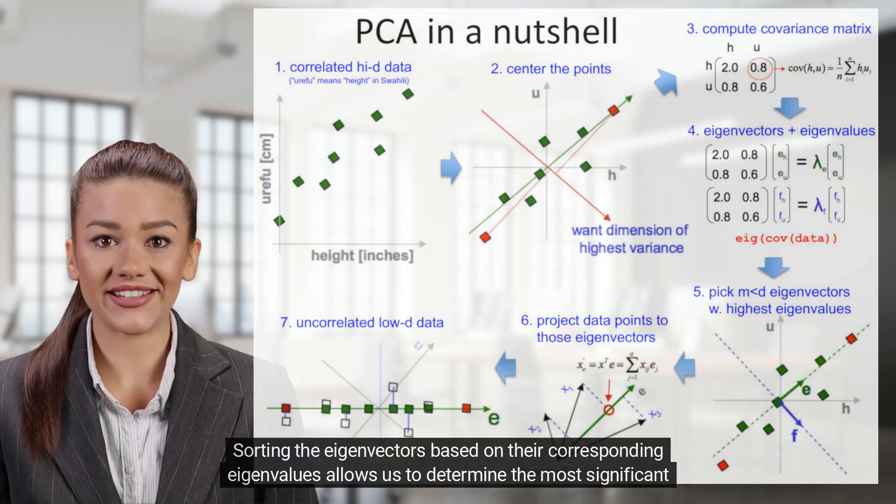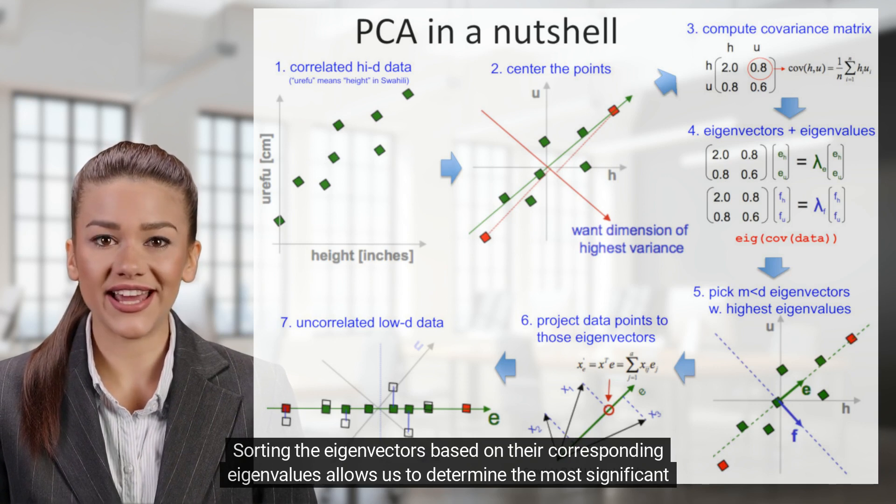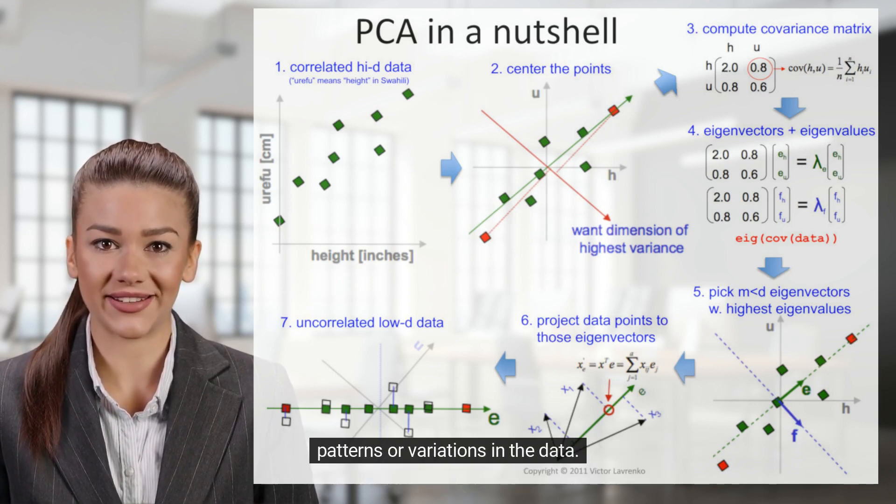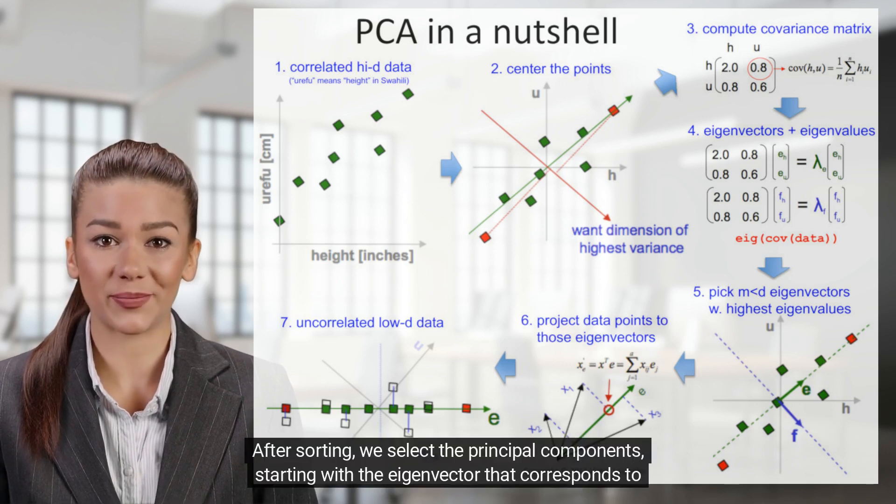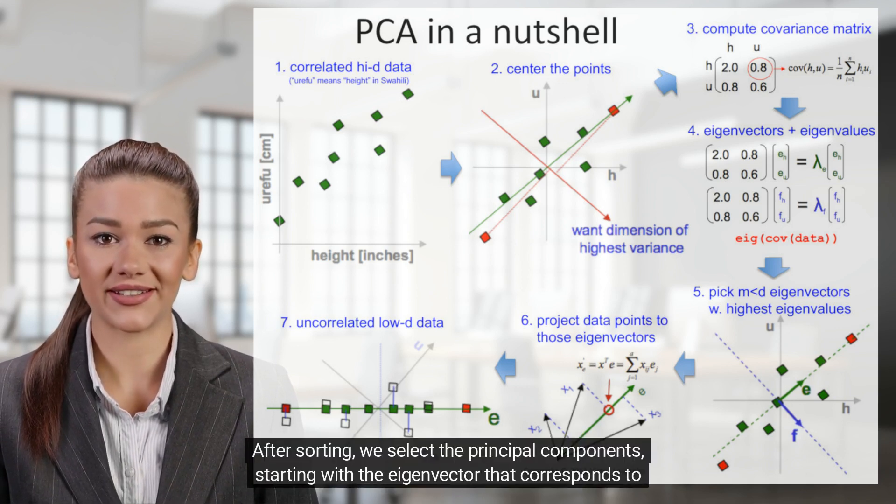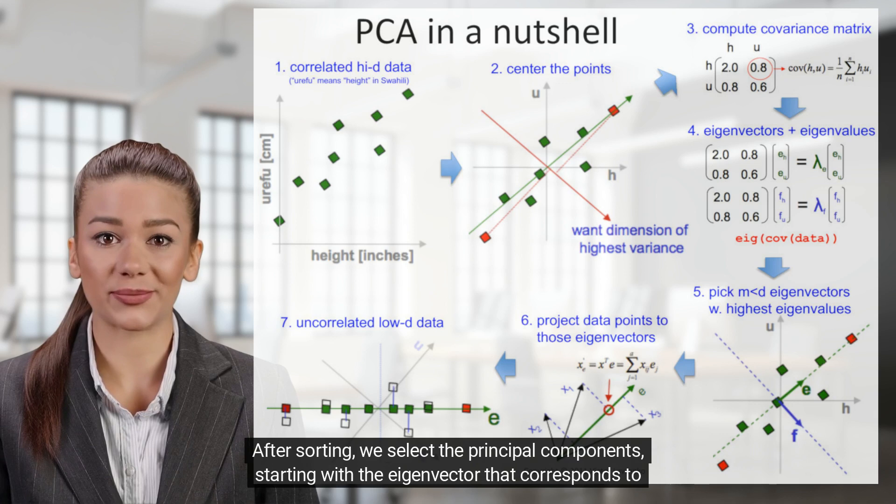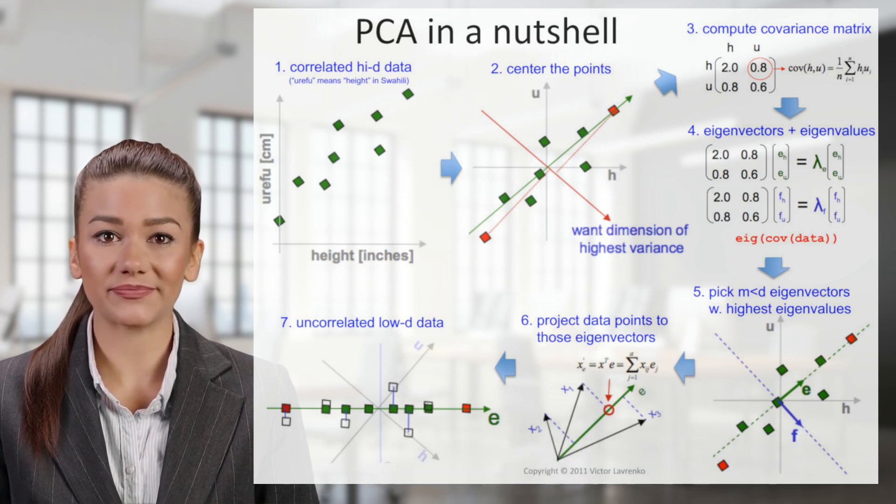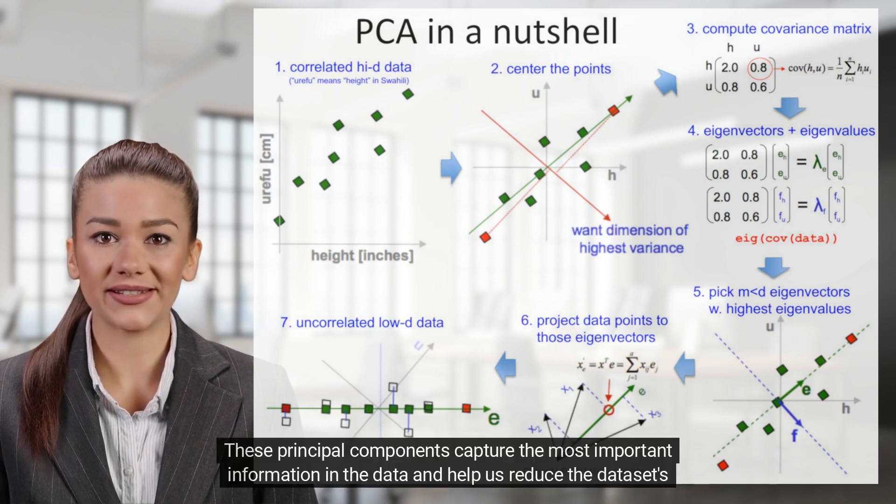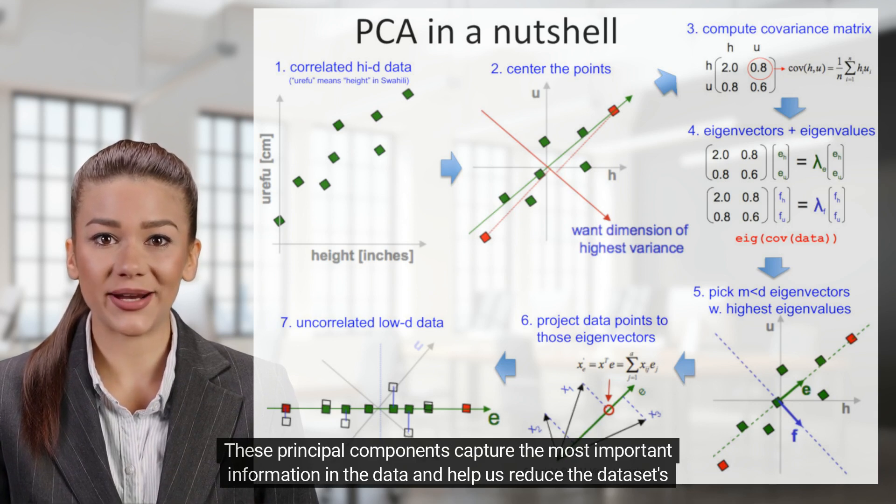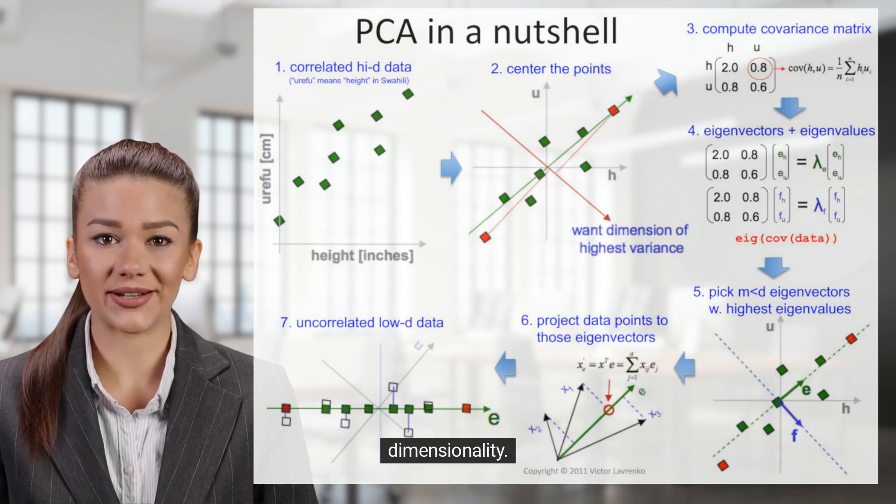Sorting the eigenvectors based on their corresponding eigenvalues allows us to determine the most significant patterns or variations in the data. After sorting, we select the principal components, starting with the eigenvector that corresponds to the highest eigenvalue. These principal components capture the most important information in the data and help us reduce the dataset's dimensionality.